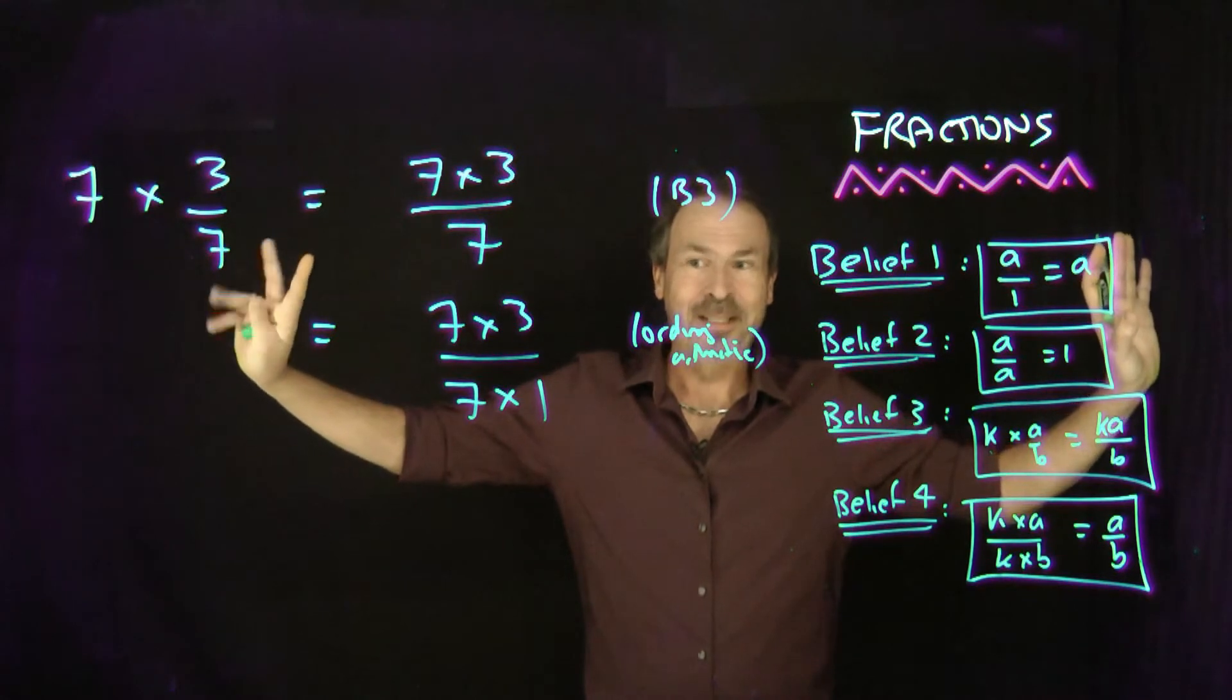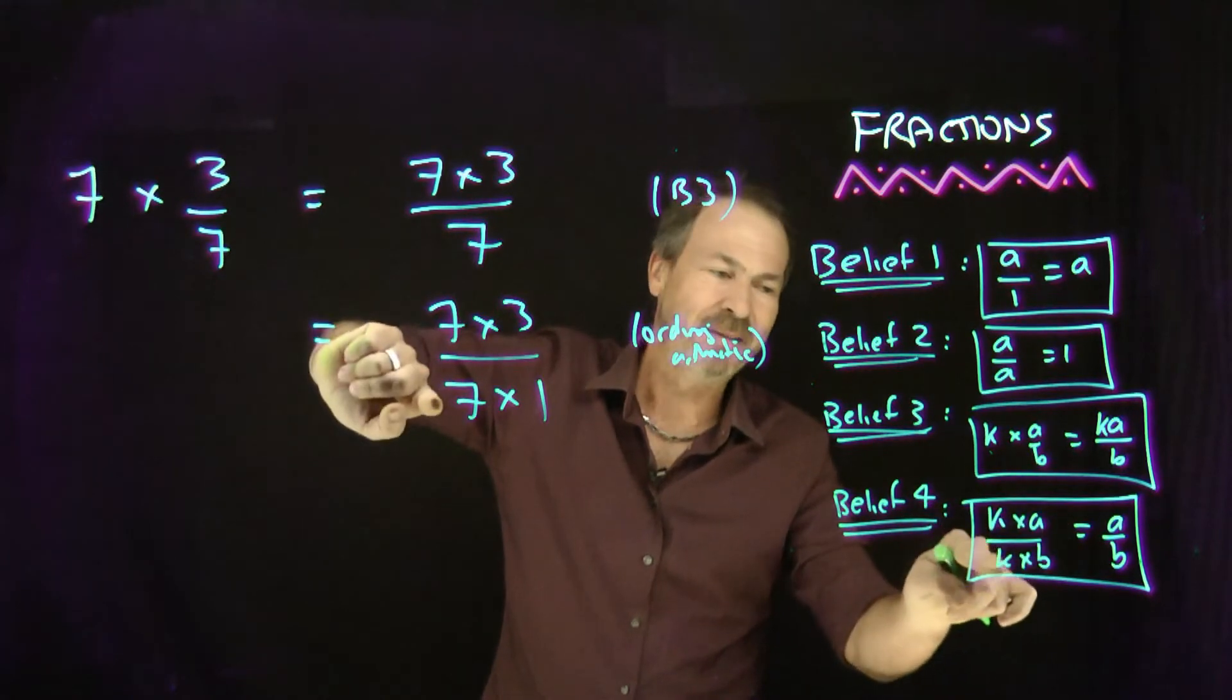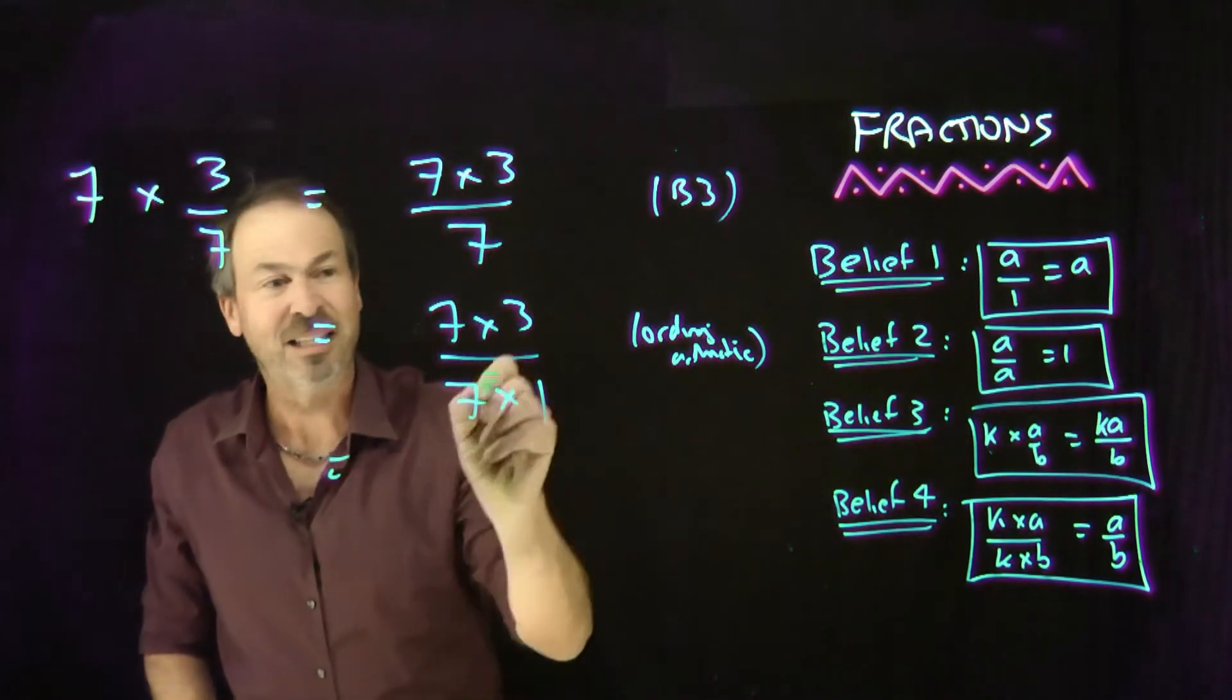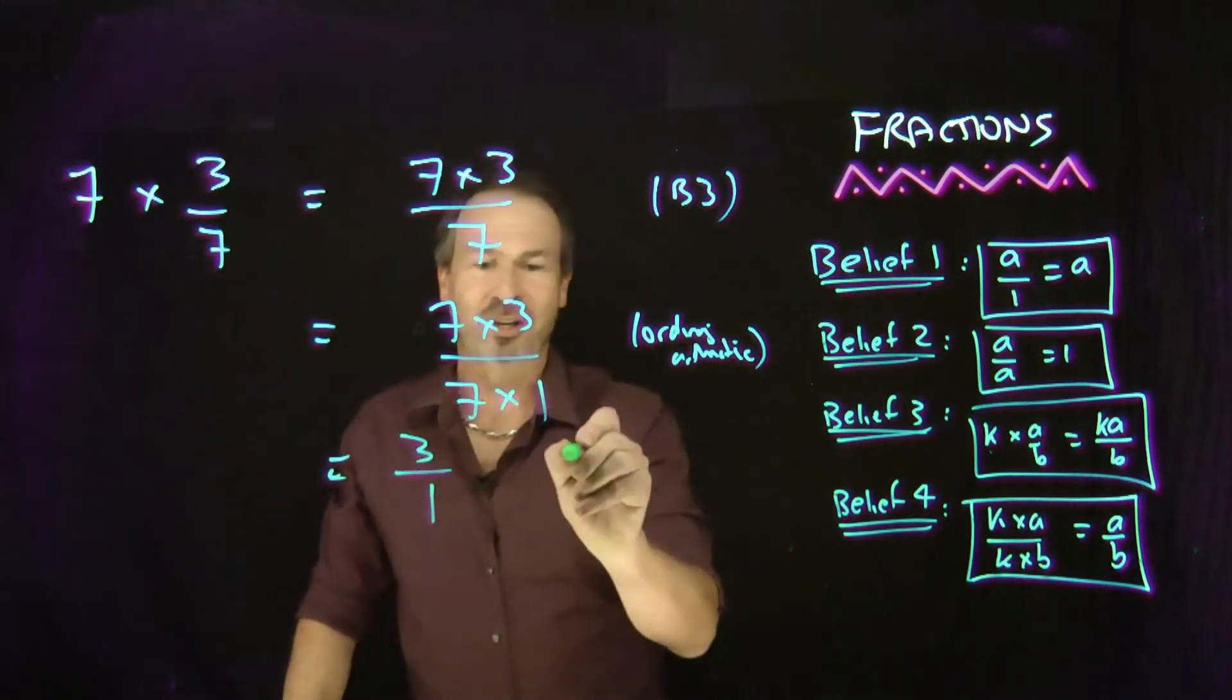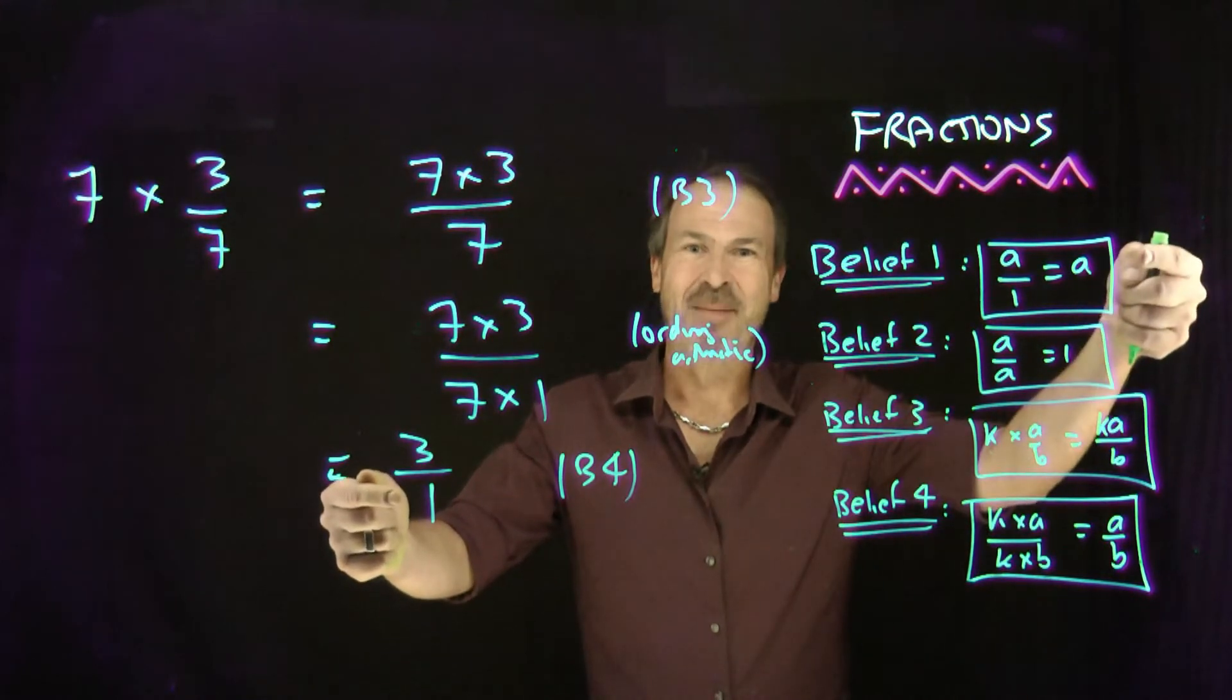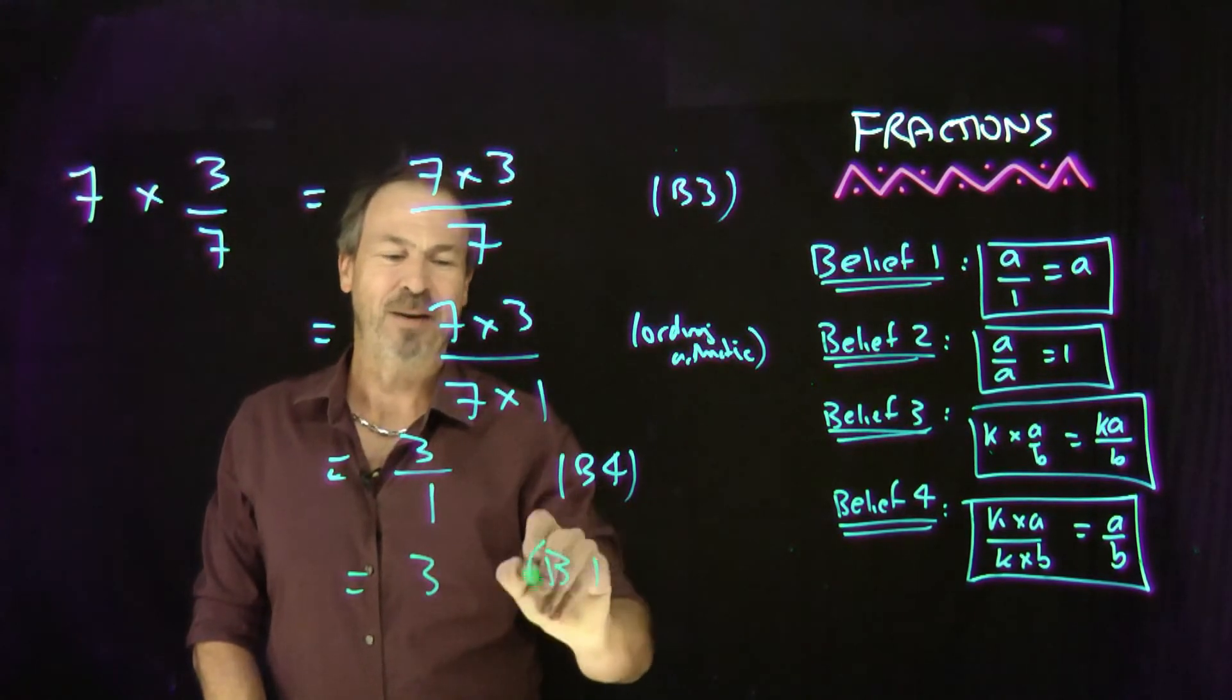But why did I do that? Well, what you see right now I've just set myself up prime for belief number four. 7 times the number on top, 7 times the number bottom, is the same fraction without the sevens there. Belief number four says, oh, get rid of the sevens—it's the same fraction as 3 on the top alone, 1 on the bottom alone. I just used belief number four. Great! But now look at it: 3 over 1. I'm now right for belief number one. 3 over 1 must be, aha, 3 by belief number one. Bingo!